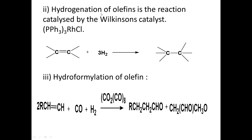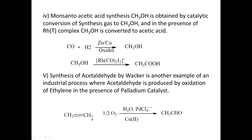Another example is hydrogenation of olefins in a reaction catalyzed by Wilkinson's catalyst, which is a ruthenium complex. This catalyst is used for simple hydrogenation of olefins — for example, converting a C=C double bond to a single bond. In hydroformylation of olefins, cobalt complexes are used, where oxygen as well as hydrogen are added across the C=C double bond.